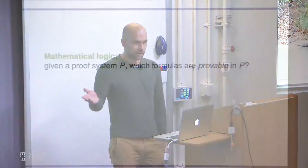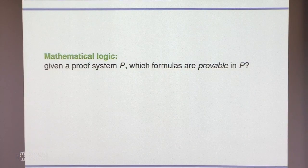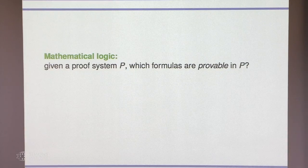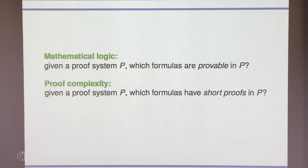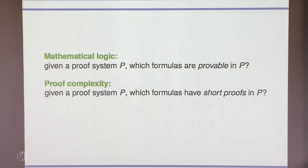I'll be talking about lower bounds in proof complexity. First I'll tell you a little bit about what proof complexity is about. The motivation depends on which background you come from. I originally studied mathematical logic where the key question is: you have a proof system P and you want to know which theorems are provable in that system. In proof complexity you ask a different question: you know something is provable, and you want to know how hard it is to prove — how short or long the proofs are. If your background is computer science, you are interested in how hard it is to compute something; here you are interested in how hard it is to prove something.